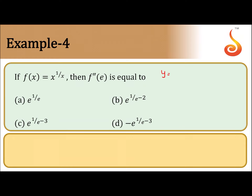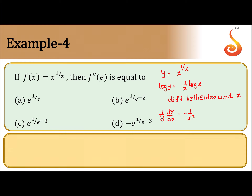y is equal to x to the power 1 by x, so log y is equal to 1 by x log x. Differentiating both sides with respect to x, what we get is 1 by y dy by dx is equal to minus 1 by x square log x.